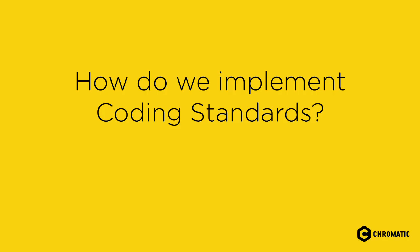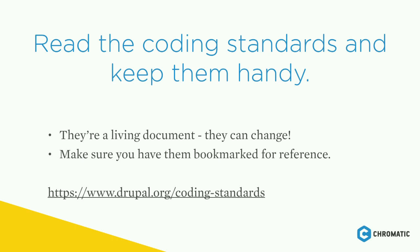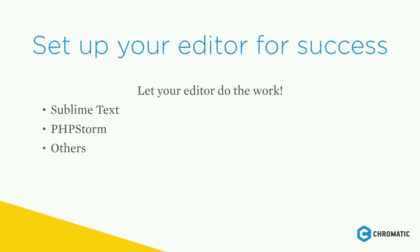Now that we've gotten some basic questions out of the way, let's talk about how we implement coding standards in our projects. The first thing I recommend is to read the coding standards and keep them handy. As Drupal's code is changed and updated, so are the coding standards — they're like a living document. Make sure you bookmark them and periodically review them for changes. You can find them at Drupal.org/coding-standards.